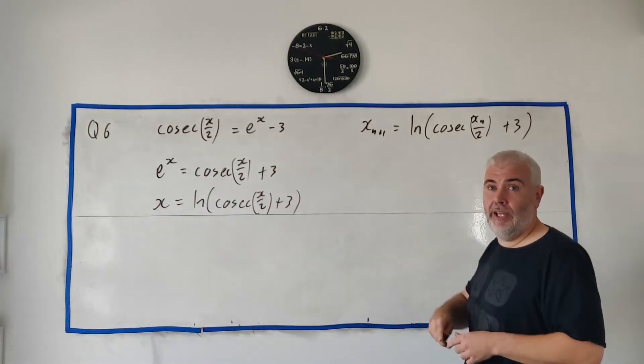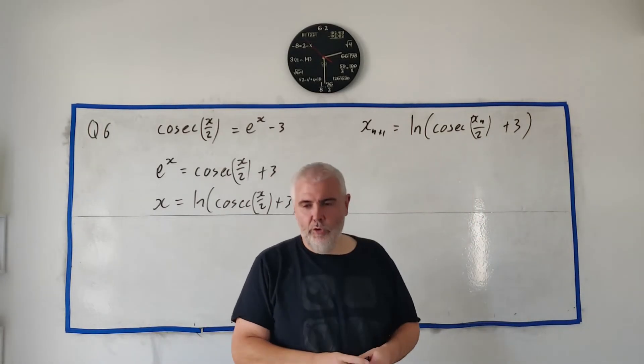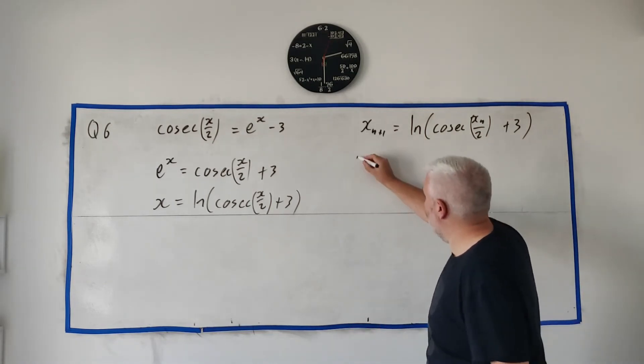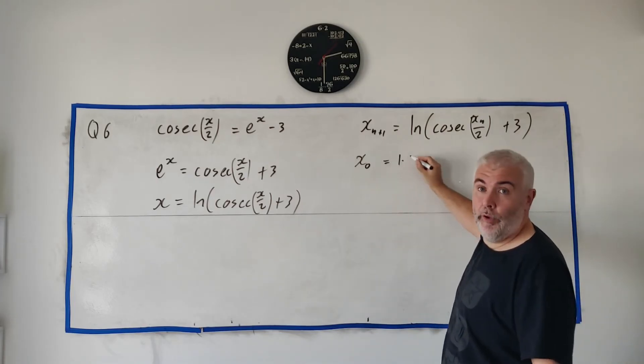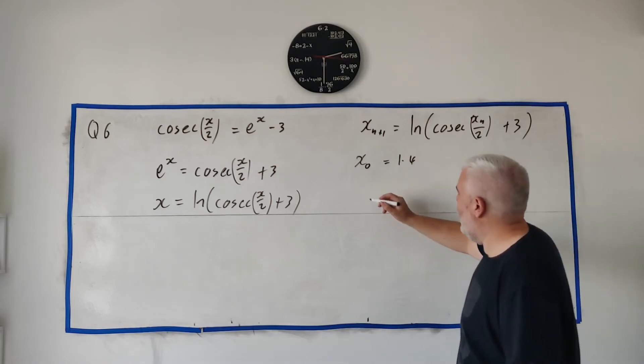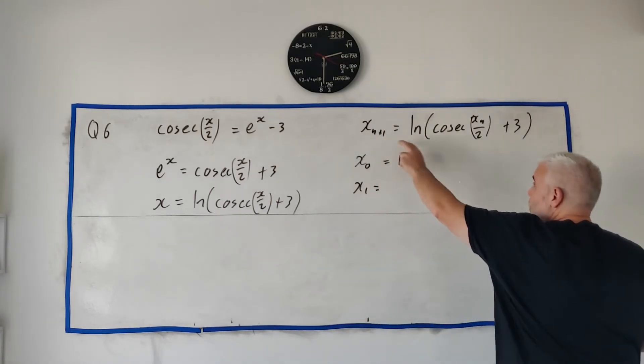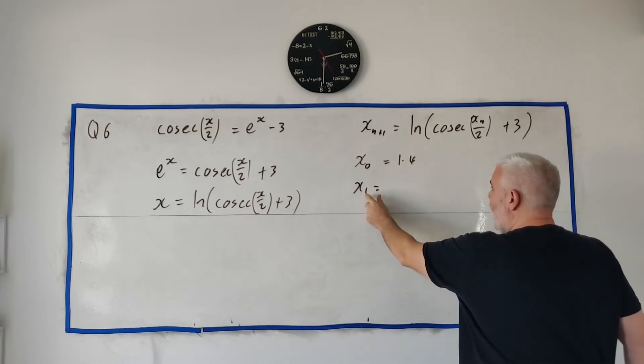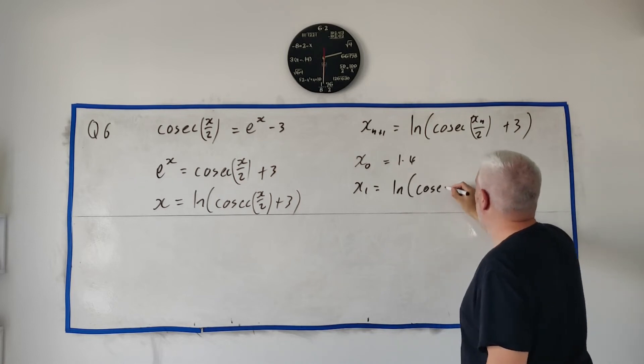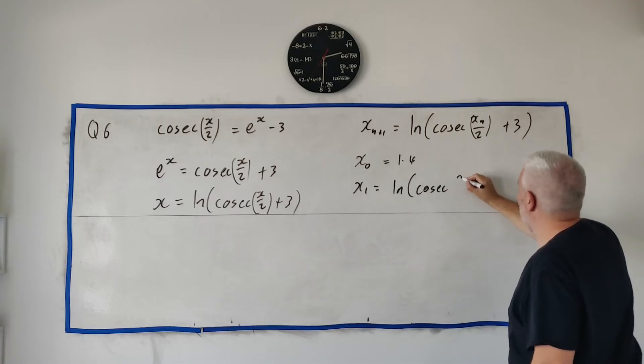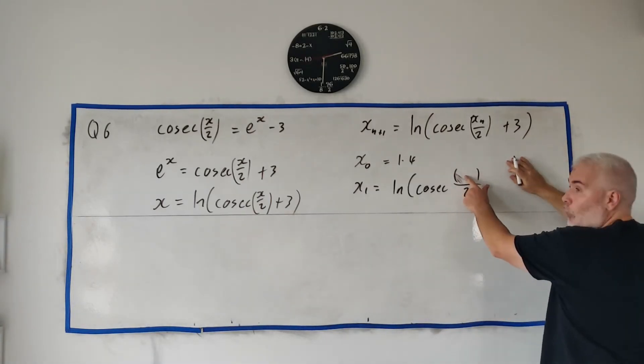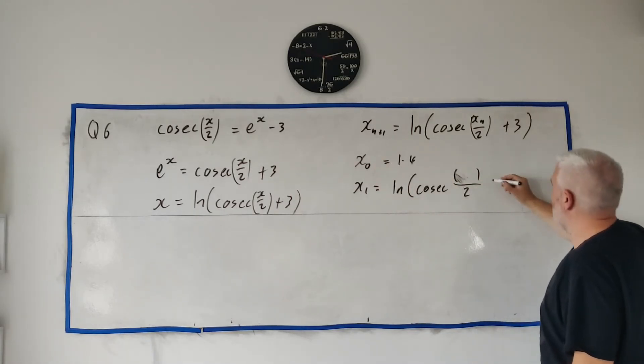And that's to use this iterative formula to find the answer. I've rubbed out the picture now but to find where that root was. And they give us advice to start the initial value to use. The initial value, we call that x_0, is 1.4. Start off with that and find x_1, x_2, x_3. You should be used to doing this question. It comes up every year. And we get that x_1 is equal to, just here, use this formula, x_1. So, n must be 0 now. Because 0 plus 1 is 1 is equal to natural log of cosec x_0. So, you can put 1.4 in here. Divide it by 2 plus 3. Okay, but I'm going to show you how to do it on the calculator.